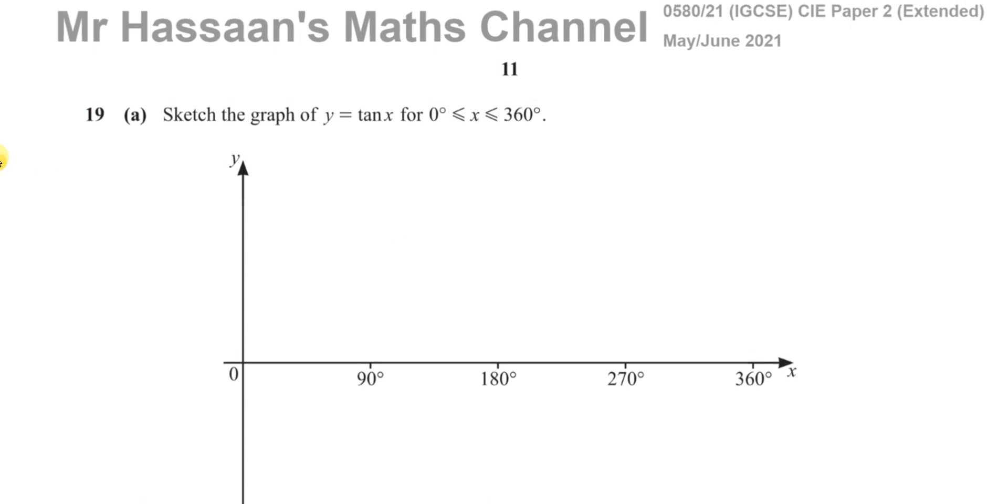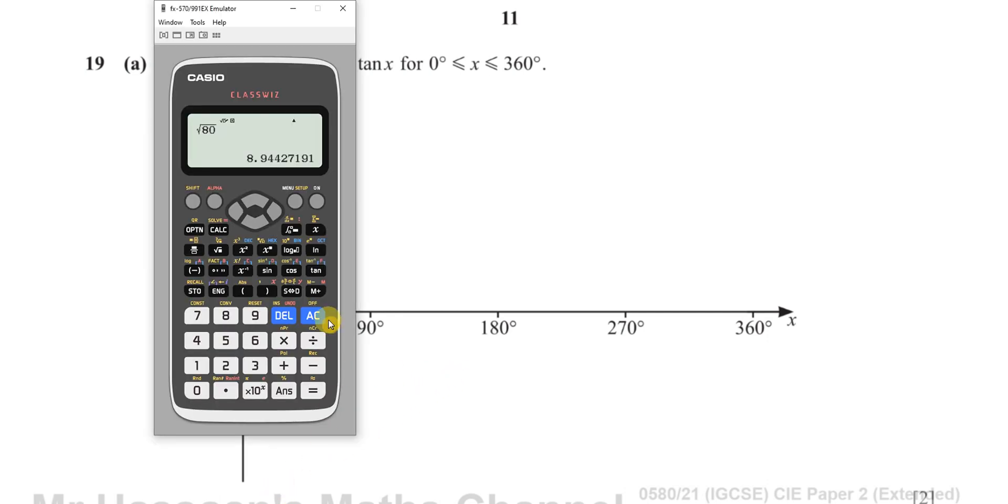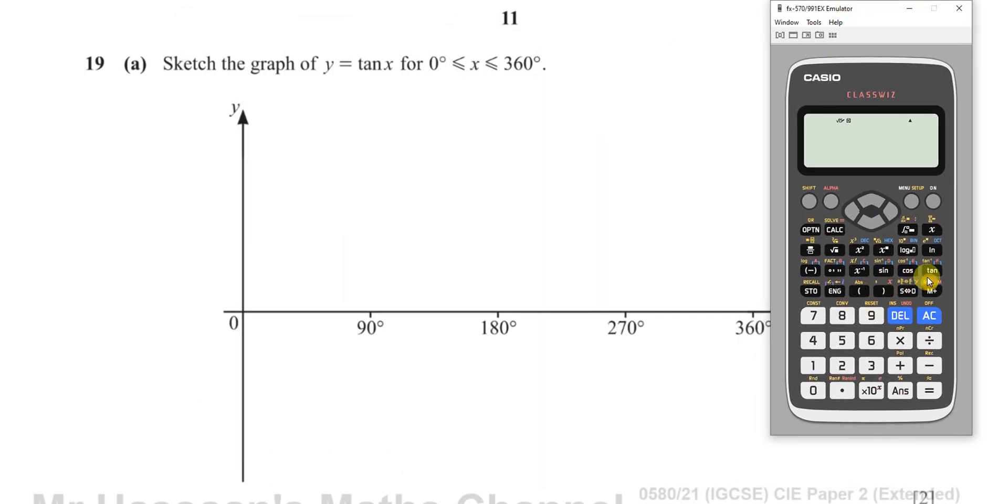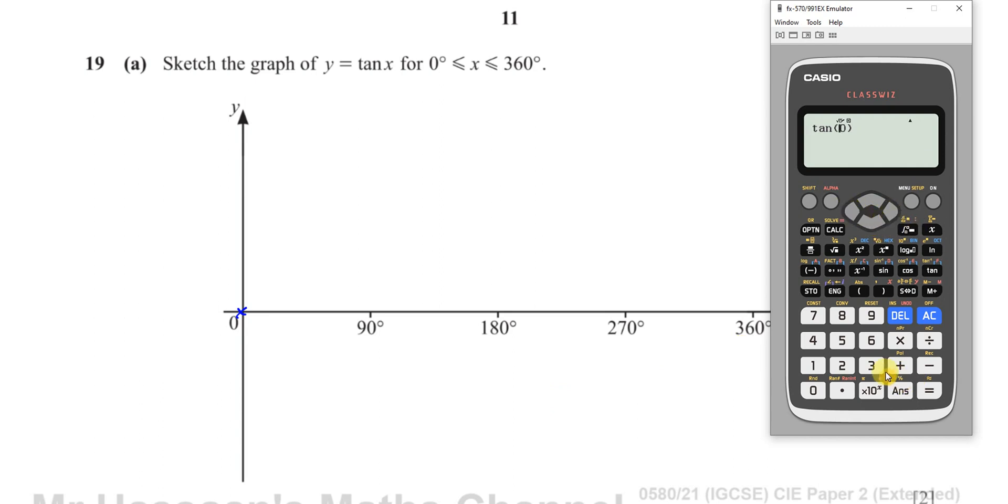For 19 part A we have to sketch the graph of y equals tan x for values of x between 0 and 360. This is something that you should have memorised how the graph looks. Just in case you go to the exam and you have forgotten how it looks, what I would suggest you do is take your calculator, make sure it's in degree mode, and put in some values of x for y equals tan x. So start with tan 0, and you see that gives us 0, so it passes through 0. Then go up in 30s. Put 30 in here and you see it gives you root 3 over 3 which is 0.577, so it's going to be somewhere up here.